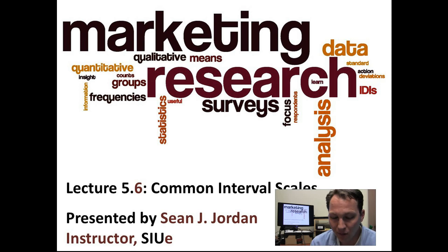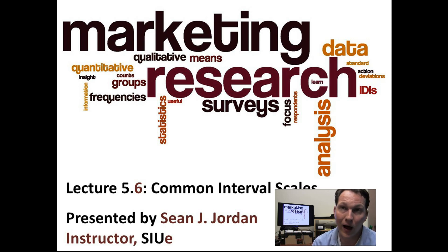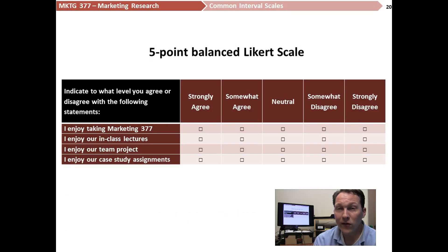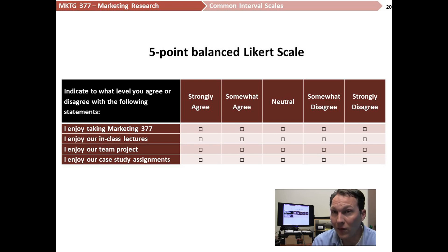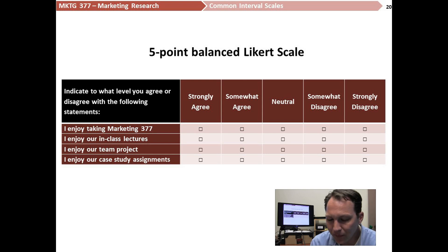In our previous lecture we talked about interval scales and how interval scales have description, order, and distance. And if they're ratio scales, they can also have origin, which is the presence of a true zero. We're going to talk about some interval scales commonly used in marketing research. The first is the Likert scale — named after the researcher who developed it. We treat it as an interval scale, though it's actually an ordinal scale strictly speaking, since an interval scale has discrete equidistant points whereas an ordinal scale just has order and direction.